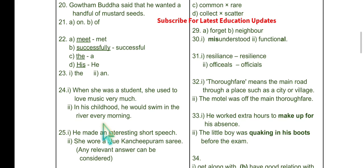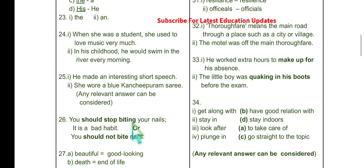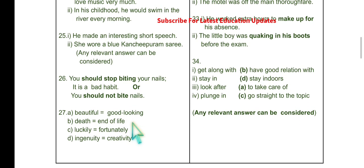Question 24: Both 'used to' and 'would' — there is a lot of confusion, but these are the right answers: 'When she was a student, she used to love music' and 'In his childhood, he would swim in the river every morning.' Question 25: 'He made an interesting short speech.' Please remember that opinions come first, then compass and size come later — so 'interesting short speech' is correct, not 'short interesting speech.' 'She wore a blue Kanchipuram sari.'